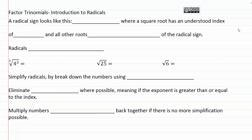Factor Trinomials: Introduction to Radicals. So I think you've seen a radical before, because you've seen square roots, and square roots are an example of a radical. A radical sign looks like this, which you've probably seen before with a square root, where the square root has an understood index of two, and all the other roots are a small number on top of the radical sign. So for example, if we had a cube root, which looks like this with a little three, this would also be called a third root, and this number right here would be our index.